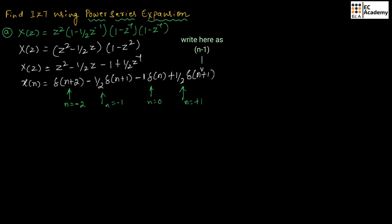We can write the values directly. X of N equals: 1 for N equal to minus 2; minus 1/2 for N equal to minus 1; minus 1 for N equal to 0 (which is at the origin); and 1/2 for N equal to plus 1. This is X of N for the given X of Z.